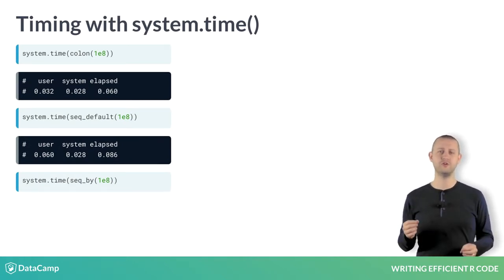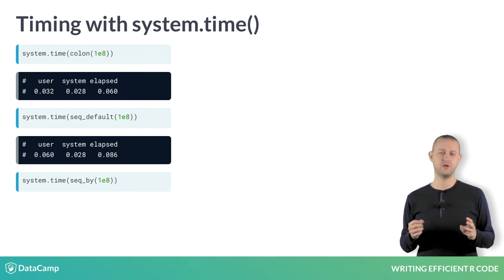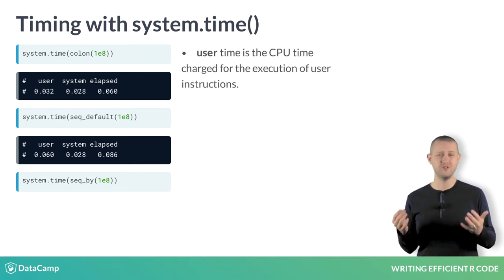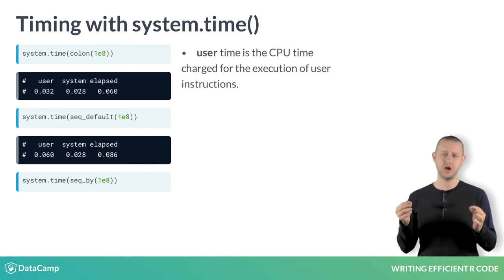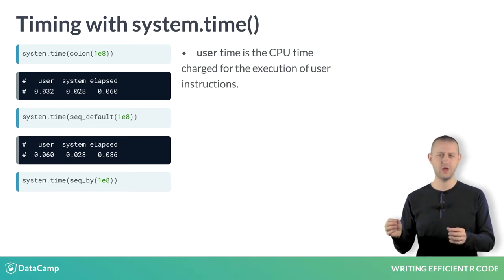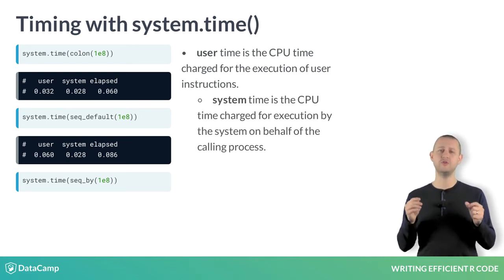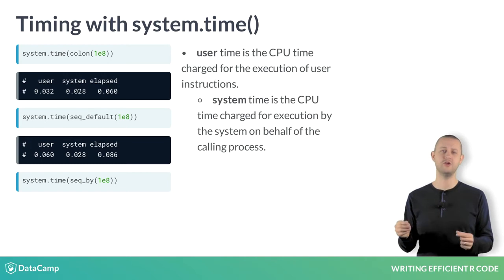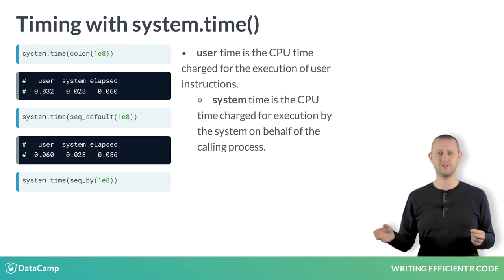Running this code produces three numbers: user, system, elapsed. The user time is the CPU time charged for the execution of the user instructions. The system time is the CPU time charged for execution by the system on behalf of the calling process.